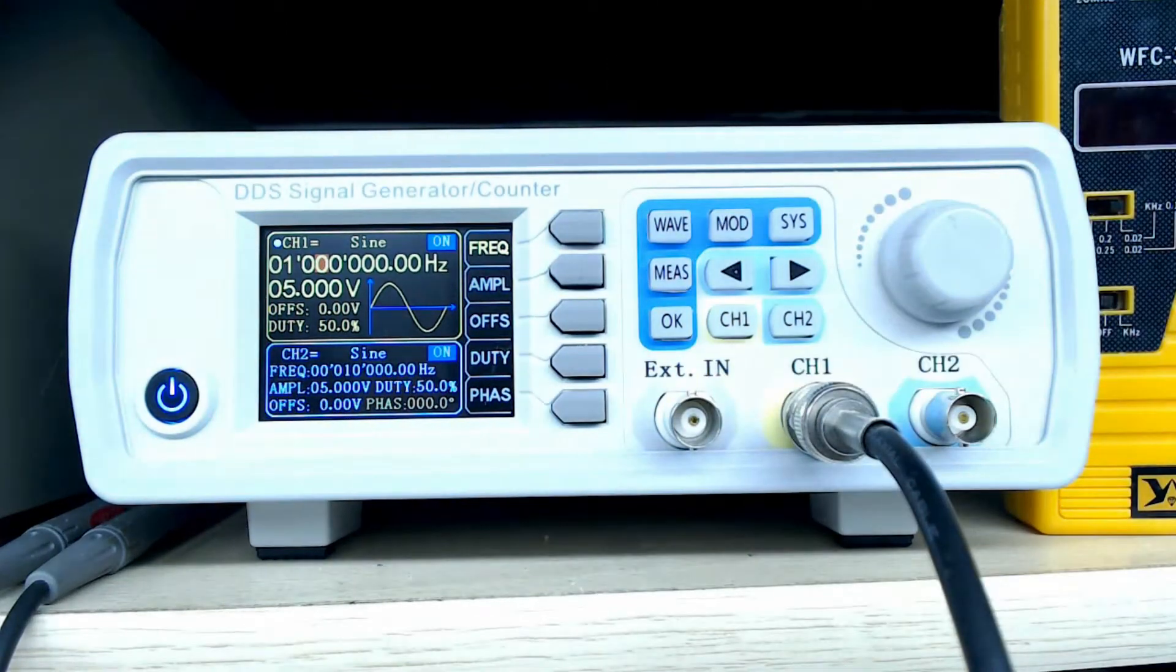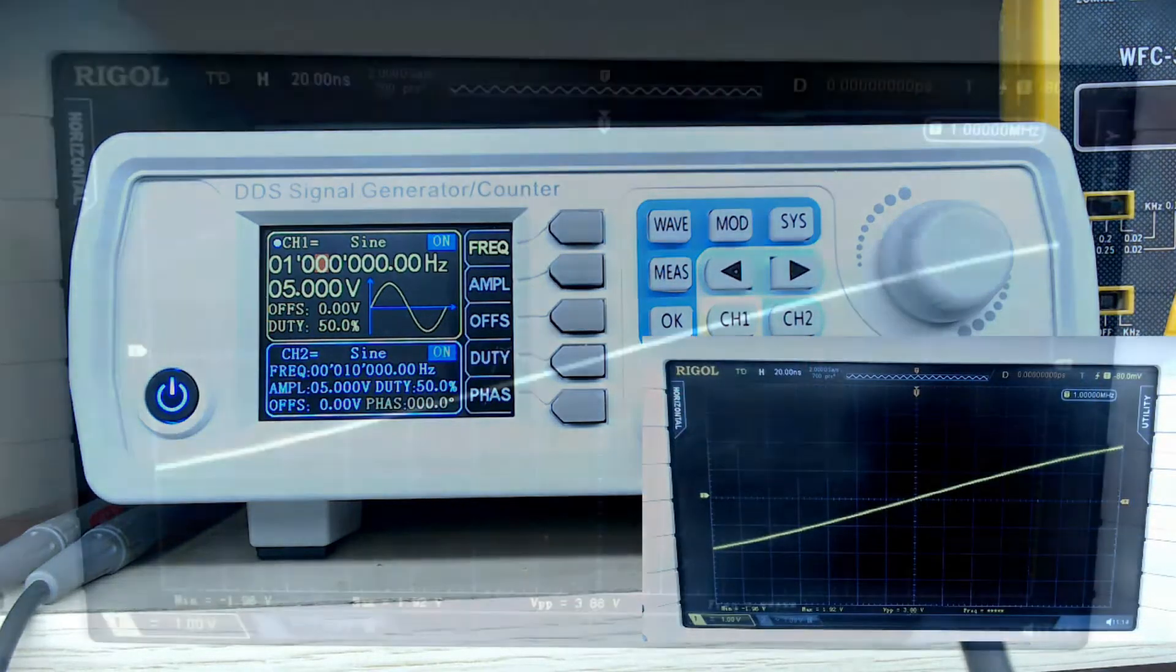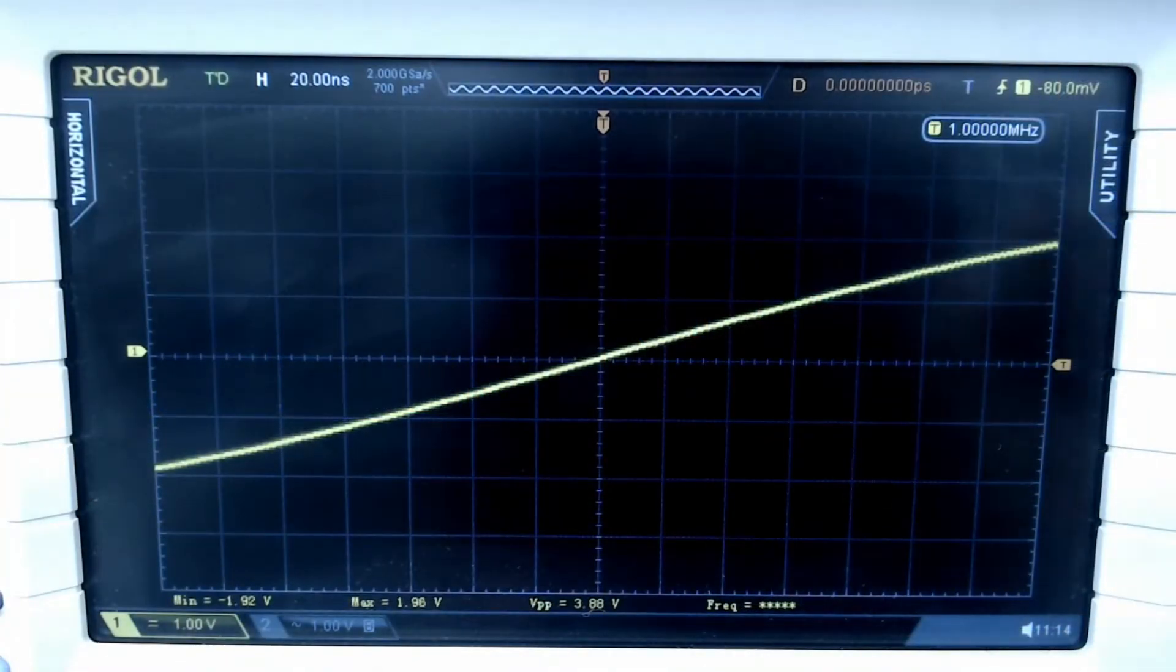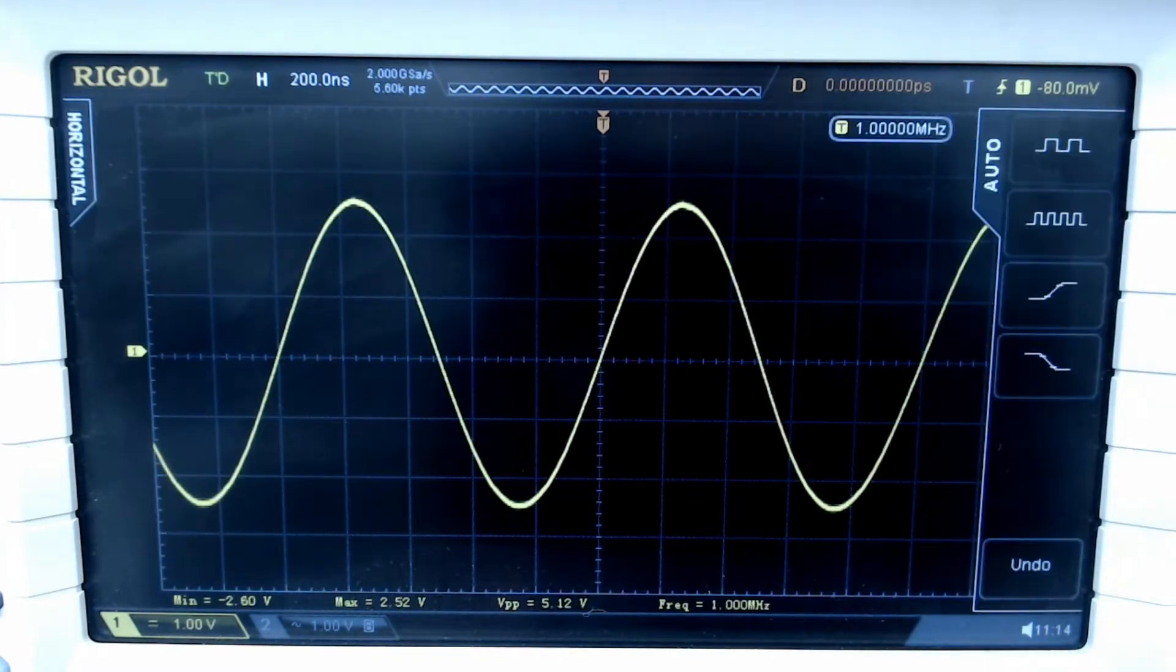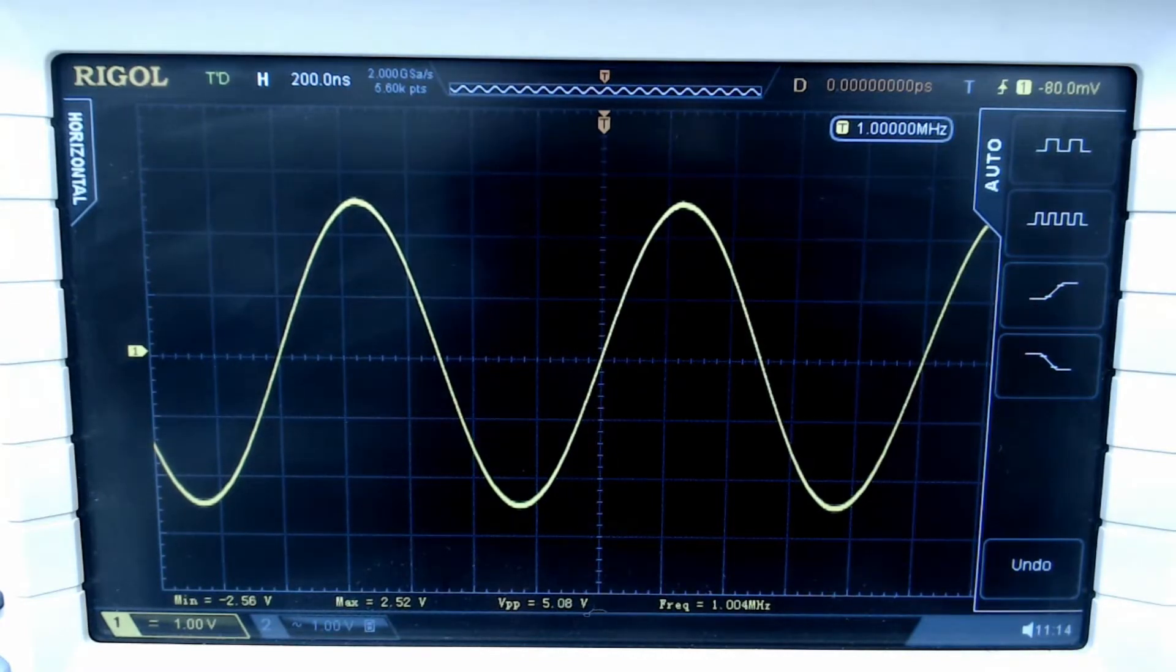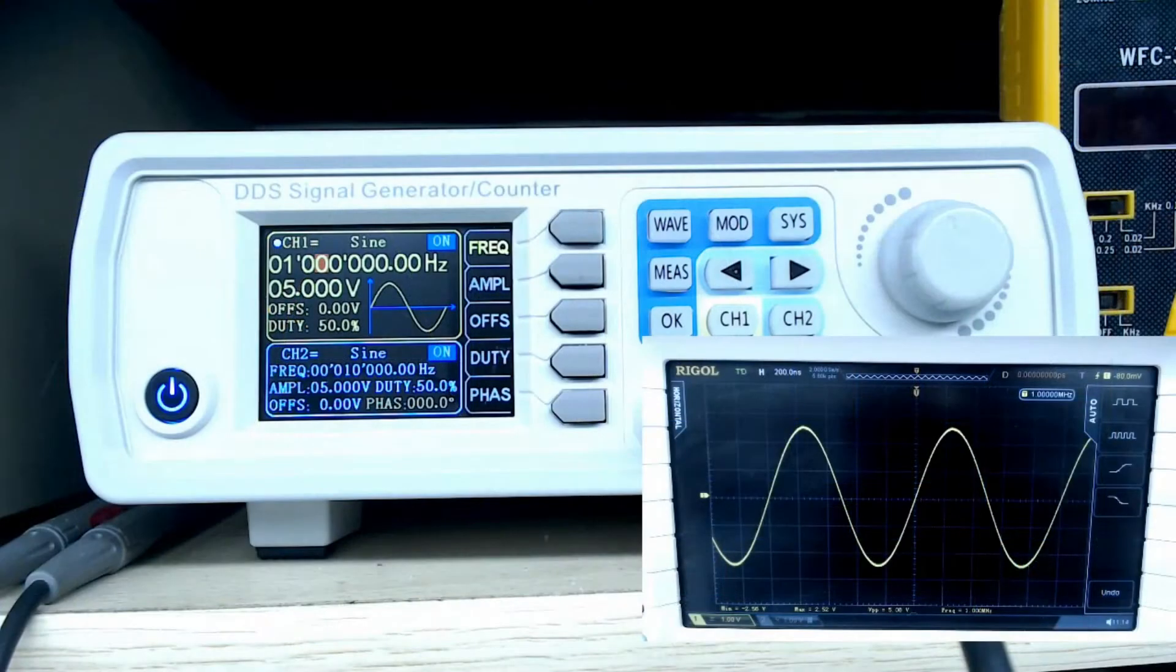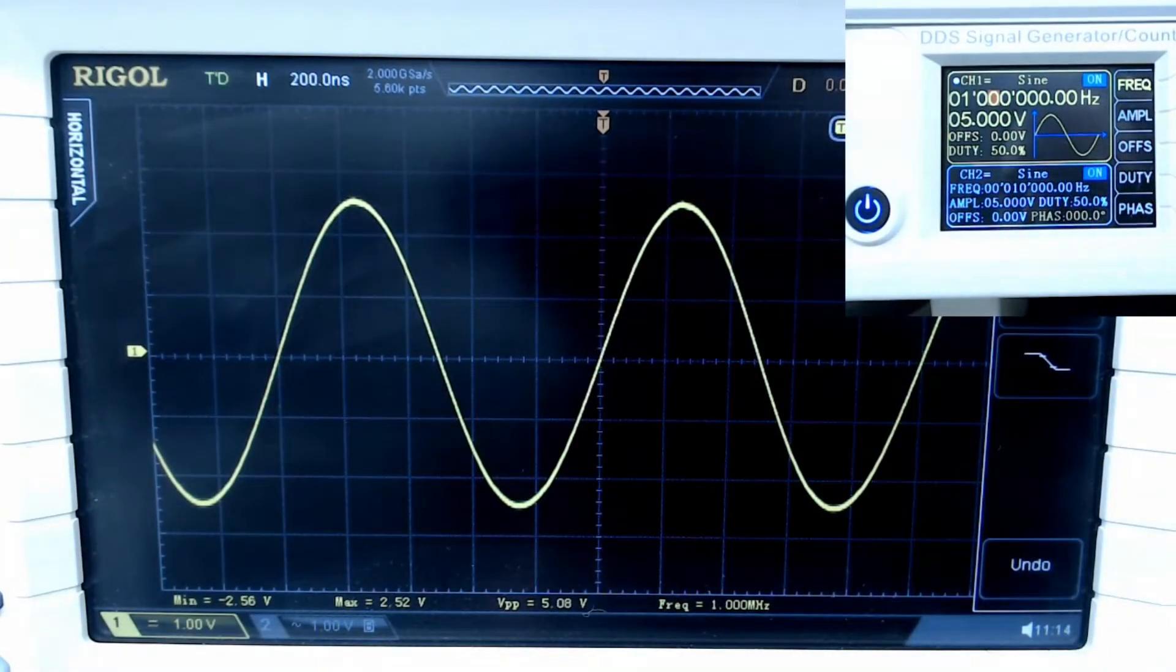I have this thing connected up to a Rigol scope which looks like this. So right now we're looking at that previous setting, the one megahertz, five volts peak to peak. You can kind of see me change the settings here.